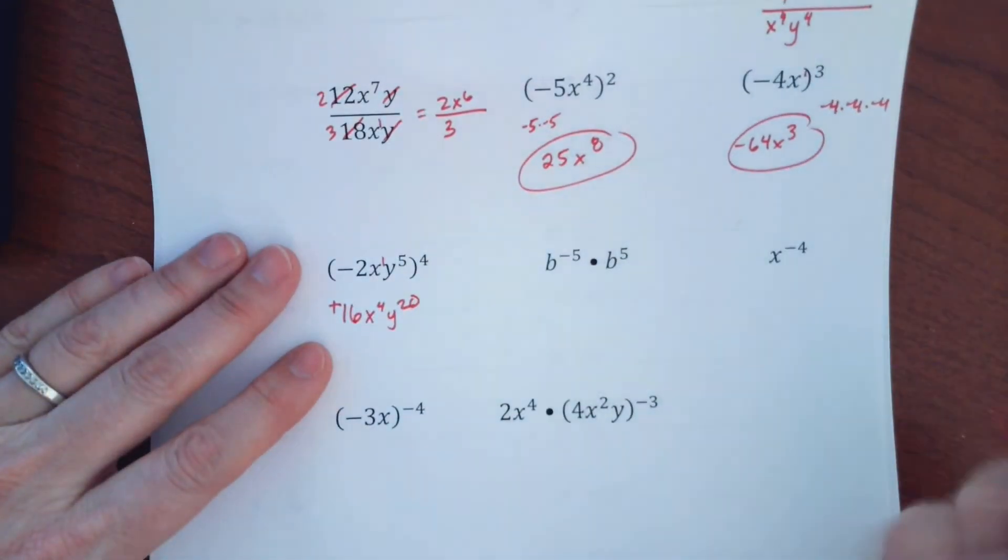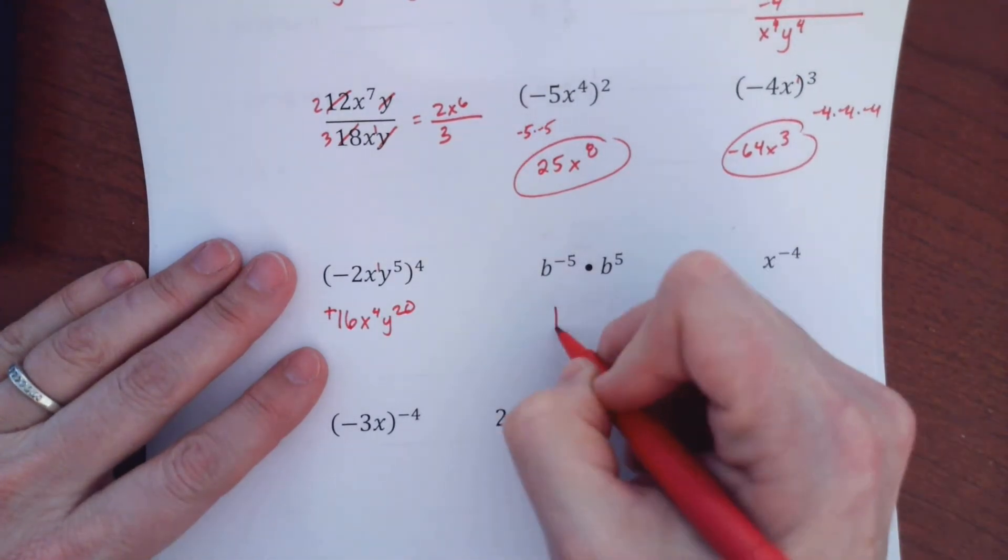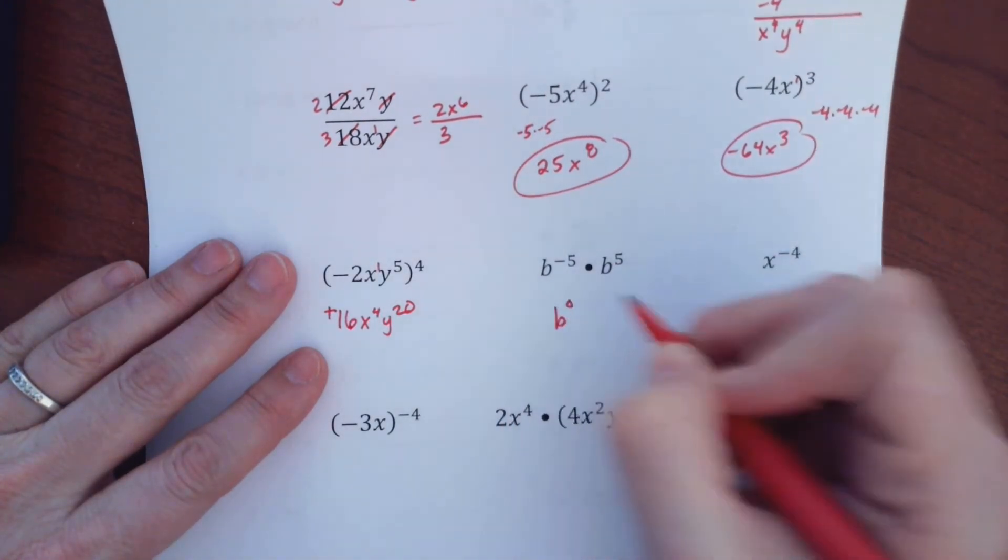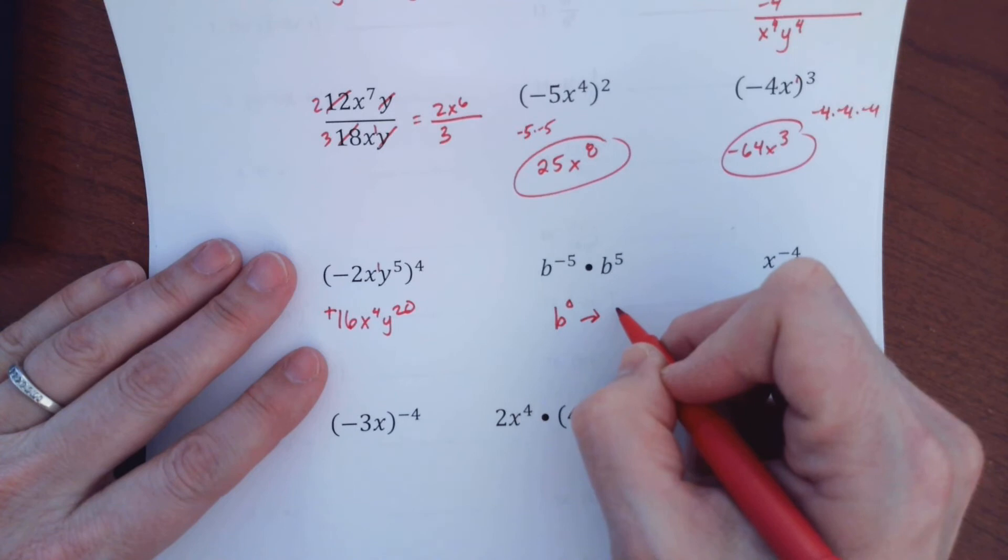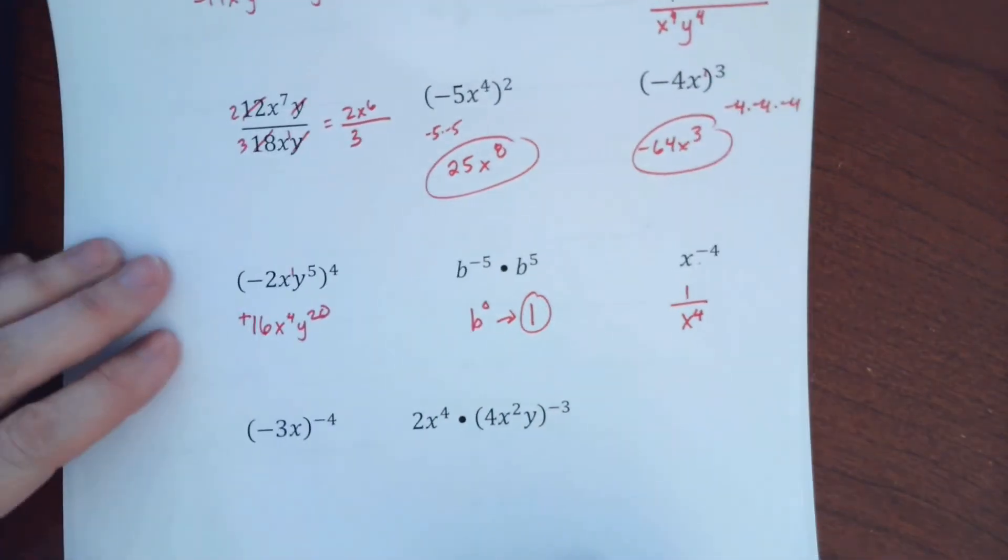All right. So here, I can think of it as two ways. I am multiplying, so I could add my exponents. Well, what's negative 5 plus 5? It's 0. And then b to the 0 is equal to 1. X to the negative 4, I can write that as 1 over X to the fourth. And that's it.